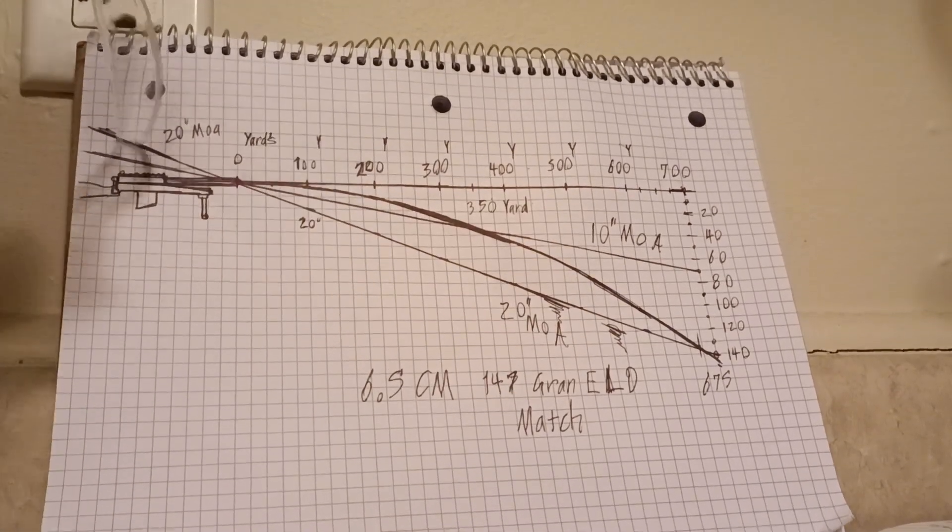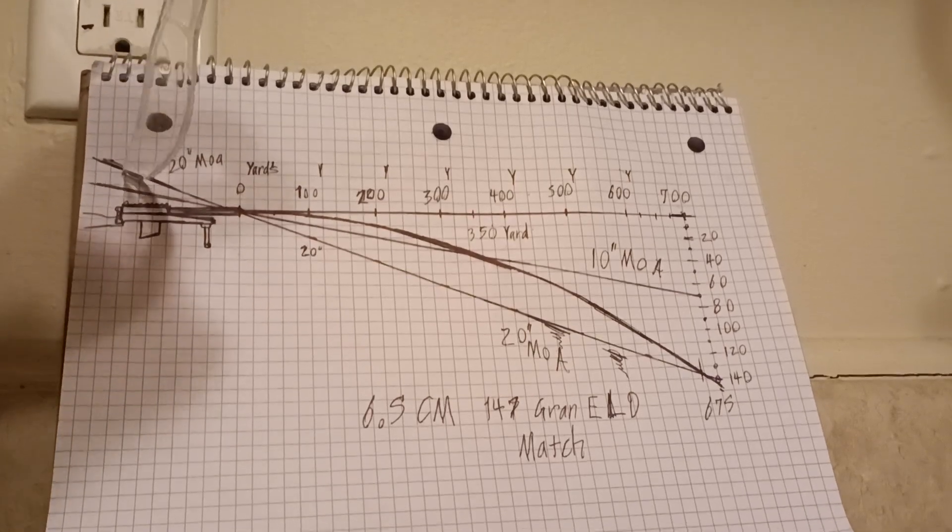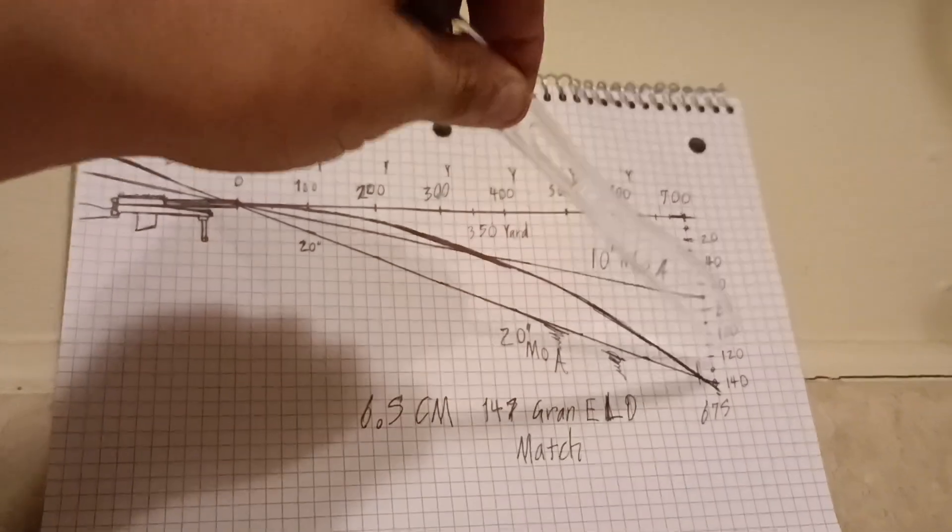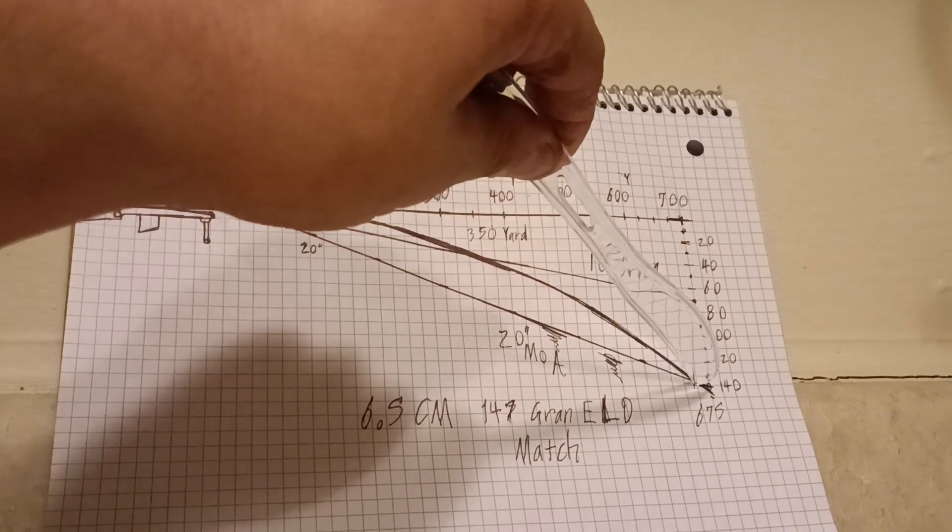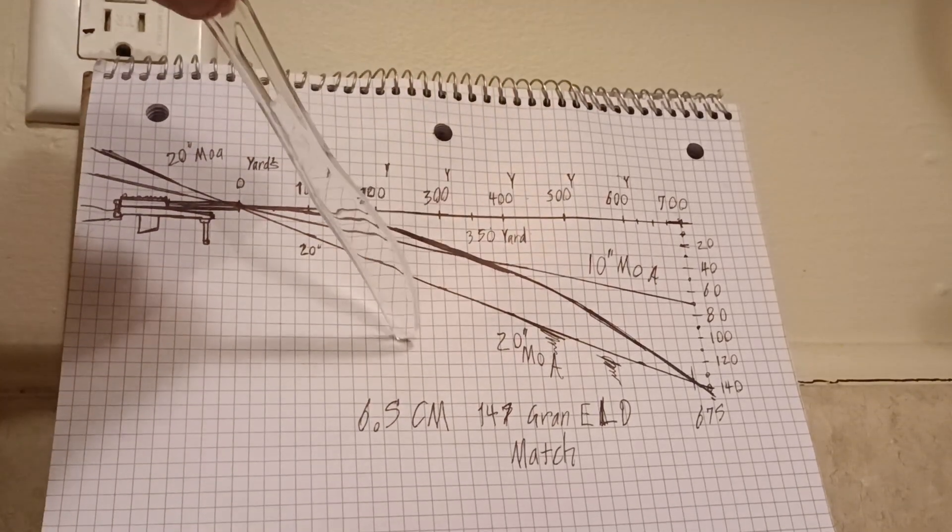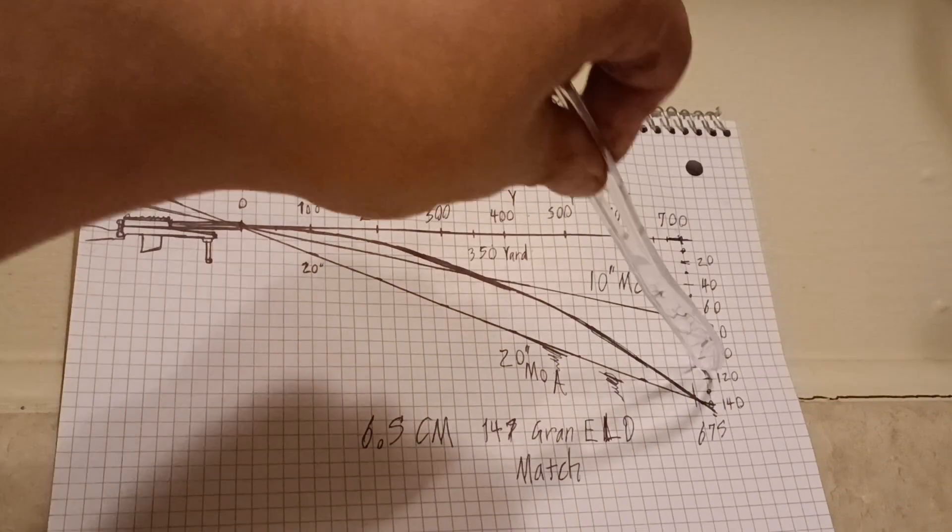That's your zero at 100. But where your scope is perfectly aligned is when you dial that 675-yard shot—that's where a 20 MOA mount intersects with your bullet's trajectory.